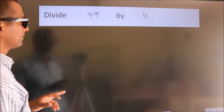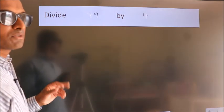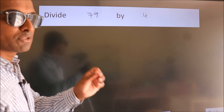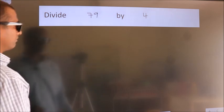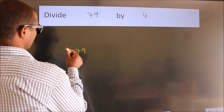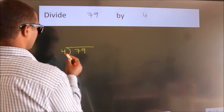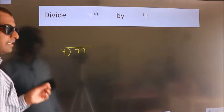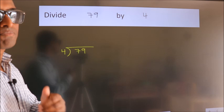Divide 79 by 4. To do this division, we should frame it in this way: 79 here, 4 here. This is your step 1. Next.